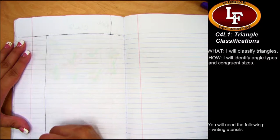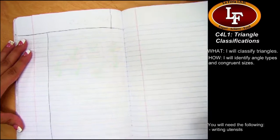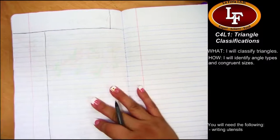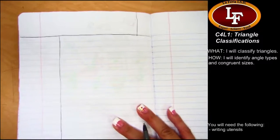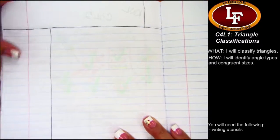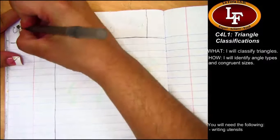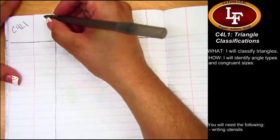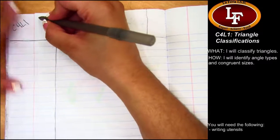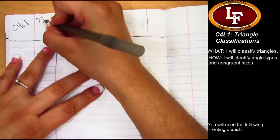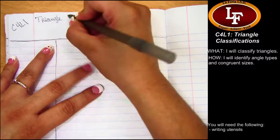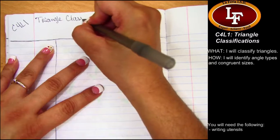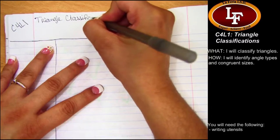Elora Dragon, while I write my lesson objectives, will you read them for us today, please? They're here on the right-hand side of the screen, just under the La Feria logo. Got it. So today, C4L1 stands for Chapter 4, Lesson 1. Triangle Classification.